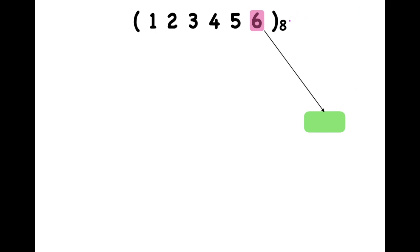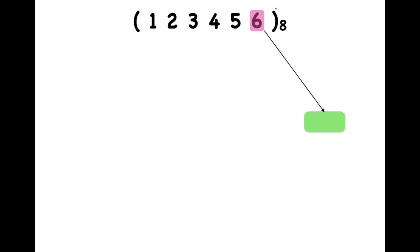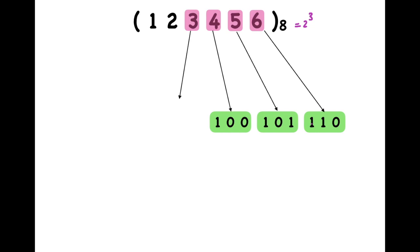We start from the rightmost digit and write every decimal using 3 bits, since 8 is 2 to the power 3. Had this been base 16 we would use 4 bits, base 32 would use 5 bits, and so on. In this question we have 2 to the power 3, so we write every digit using 3 bits — for example, 6 is written as 0 1 1. Similarly we write all digits as their 3-bit binary equivalents.